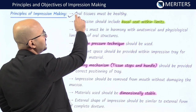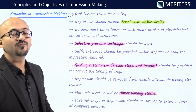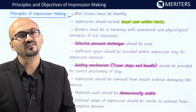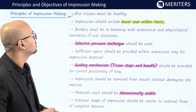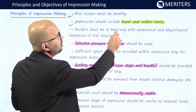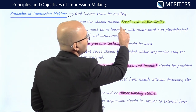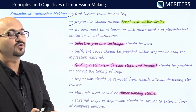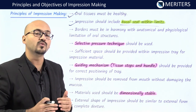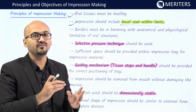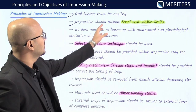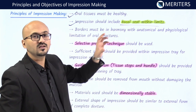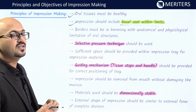All oral tissues must be healthy before making the impression. Any inflamed mucosa should not be recorded because that is going to affect the fit of your final prosthesis. The impression should include the basal seat within limits — the area to be covered has to be limited. We do not want any over-extended impressions because that will be reflected in the final prosthesis. The impression should include only the basal seat within the confines of the denture base.